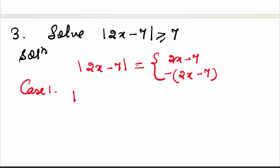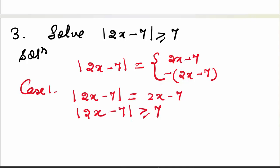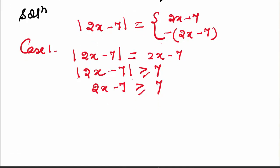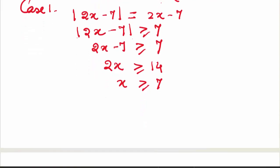So to solve case 1: for the given inequality, we take mod of 2x minus 7 as 2x minus 7. Our question was mod of 2x minus 7 is greater than or equal to 7. Replace the modulus by 2x minus 7 is greater than or equal to 7. Add 7 on both sides: 2x is greater than or equal to 14, which gives x is greater than or equal to 7. So we have one part of the solution.